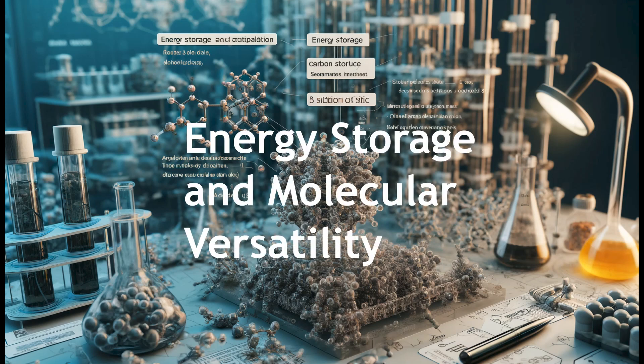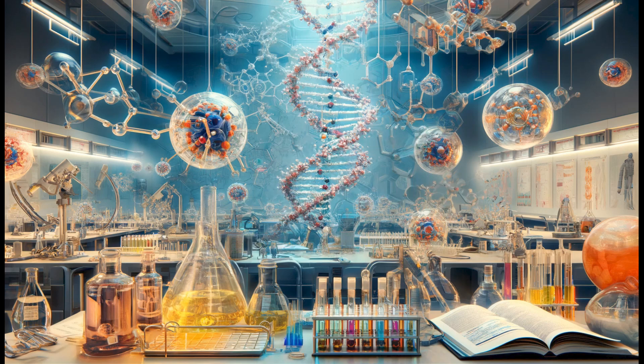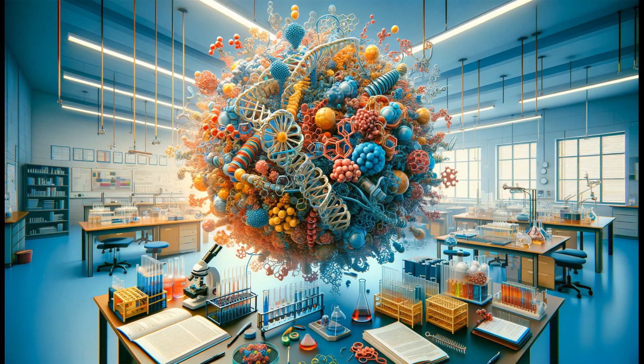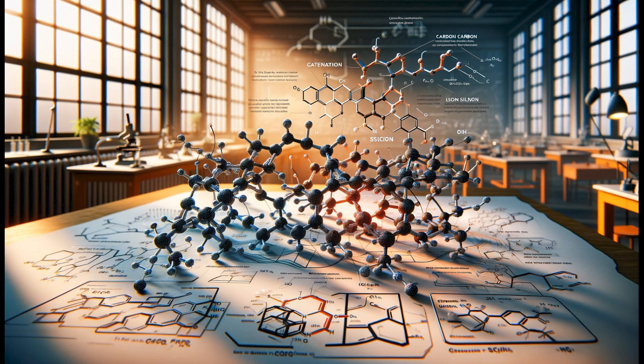Energy storage and manipulation are other areas where carbon and silicon differ significantly. In carbon-based life, energy is stored in various carbohydrate molecules that can be easily broken down and rearranged to release energy when needed.